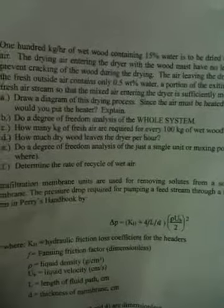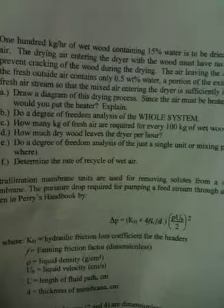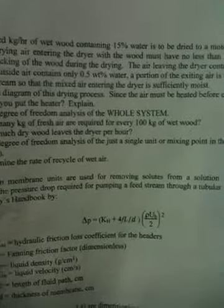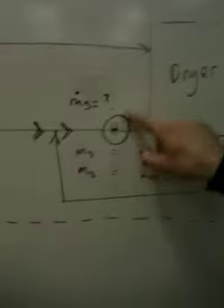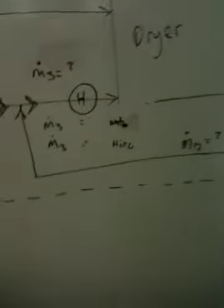Since the fresh outside air contains only 0.5% water, a portion of the exiting air is recycled back to join the fresh air stream so that the mixed air entering the dryer is sufficiently moist. Now, letter A is draw a diagram of this drying process. Since the air must be heated before entering the dryer, where would you put the heater? Explain.